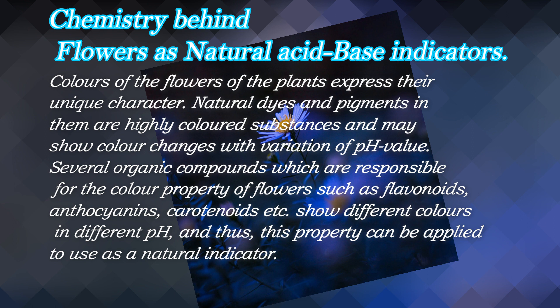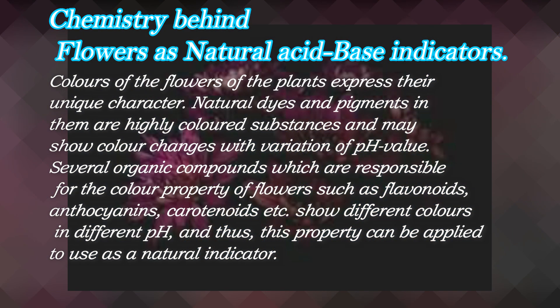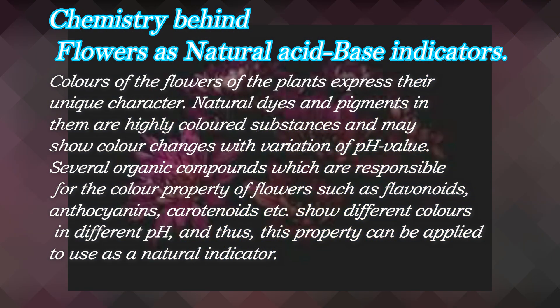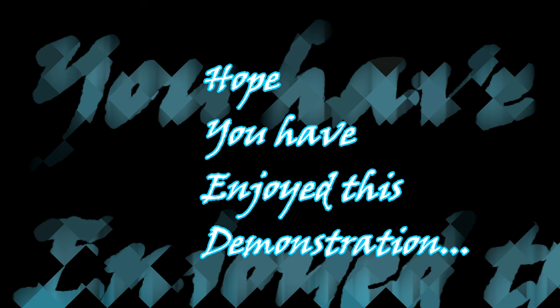The chemistry behind flowers as natural acid-base indicators: the colors of flower plants express their unique character. Natural dyes and pigments in them are highly colored substances that may show color changes with variation of pH value. Several organic compounds responsible for the color property of flowers — such as flavonoids, anthocyanins, and carotenoids — show different colors at different pH, and thus this property can be applied to use them as natural indicators.